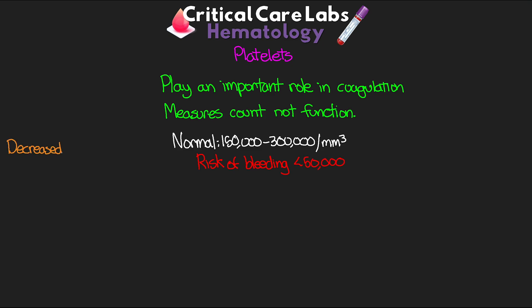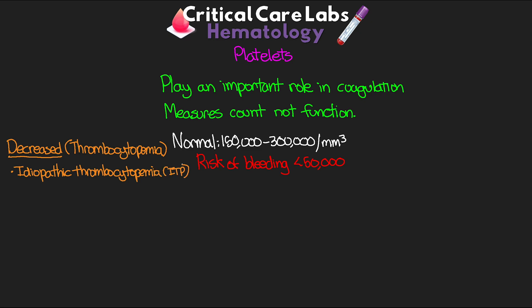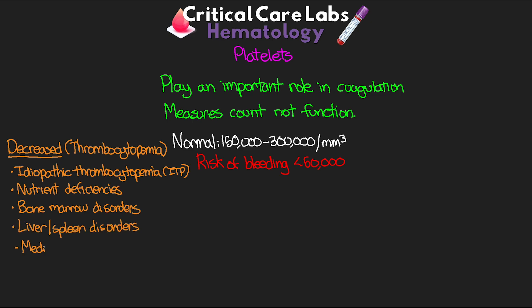If we have decreased platelet amounts, this is what we refer to as thrombocytopenia. This can be the result of idiopathic thrombocytopenia or ITP, nutrient deficiencies, bone marrow disorders, liver and spleen disorders, as well as medications such as our neoplastic medications, amiodarone, and protonics.